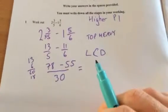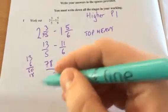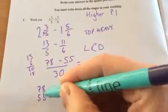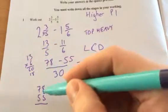Then I can do the subtraction. Because now they're equivalent fractions, I can do 78 minus 55. If you're not sure, I always revert back to column subtraction or column addition.